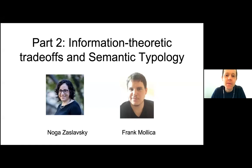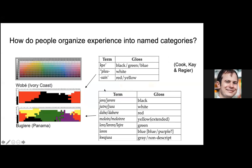Good morning, everybody. In this next part, Charles Kemp will talk about information-theoretic trade-offs and semantic typology, acknowledging that this perspective is shaped by things learned from many collaborators including Noga, Frank, Terry Regier, and others. The big question motivating this section: how do people organize experience into named categories?